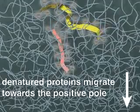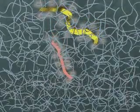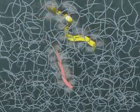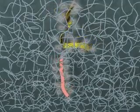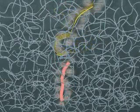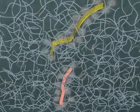The migrating polypeptides are retarded by the tangled network of polyacrylamide. Smaller polypeptides travel more easily and quickly through the pores in the network than do larger polypeptides.